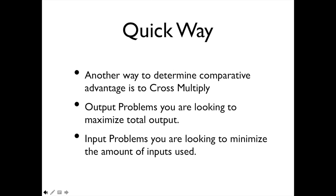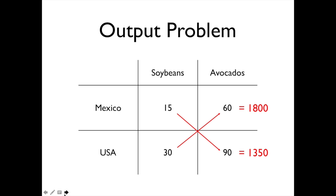There's another way to determine comparative advantage called the cross-multiply method. If you have an output problem, you're looking to maximize the absolute number of output you can create. If you have an input problem, you're looking to minimize the amount of inputs used. For example, this chart represents the number of pounds of avocado and soybeans Mexico and the United States could make in a given day. In one day, Mexico could make 15 pounds of soybeans and 60 pounds of avocados; the United States could make 30 pounds of soybeans and 90 pounds of avocados.